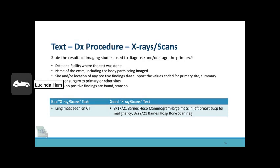Now let's look at text in regards to x-rays or scans. State the results of imaging studies used to diagnose and/or stage the primary. Please include the date and facility where the test was done, name of the exam including the body parts being imaged, size and/or location of any positive findings that support the values coded for the primary site, summary stage or surgery to the primary site or other sites, and when no positive findings are found, please state so.